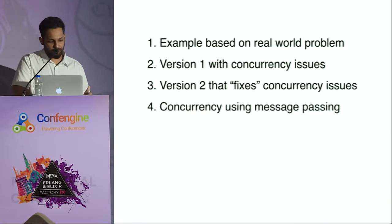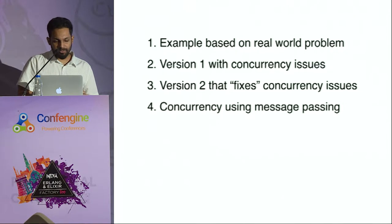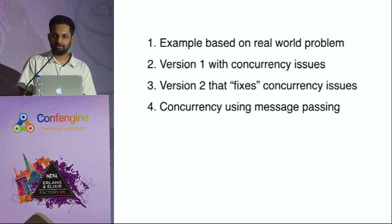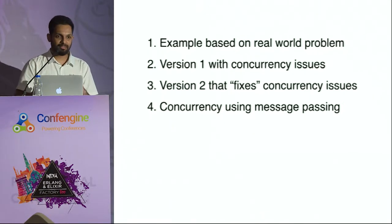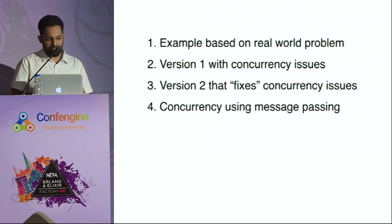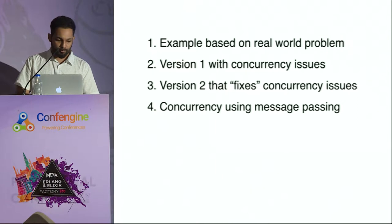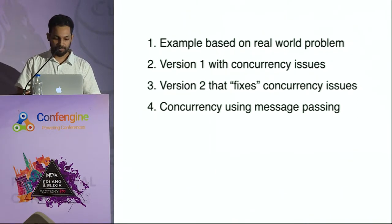First, we look at an example similar to the real-world problem we worked on. Then we'll see the first version of the code that had a lot of concurrency problems. Then we look at a second version that fixes the concurrency problems but brings in some other problems. And finally, we'll talk about the actor pattern and the message passing concurrency model and how we use that to solve the problem using Elixir.